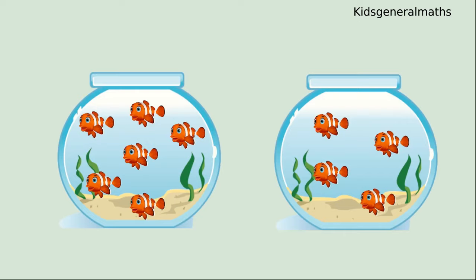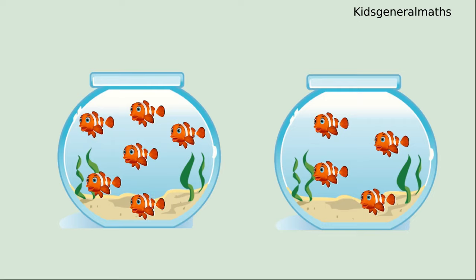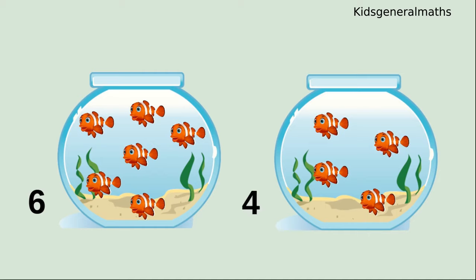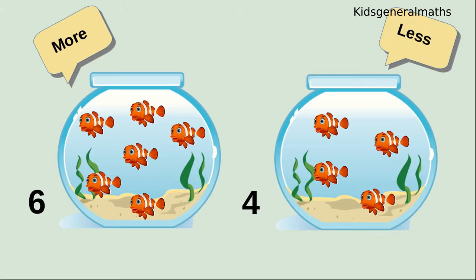Next we are going to compare these two fish pots. 1, 2, 3, 4, 5, 6. The first pot has 6 fishers. 1, 2, 3, 4. The second pot has 4 fishers. While comparing these two pots, 6 is more and 4 is less.